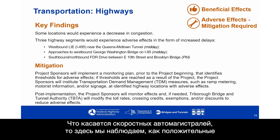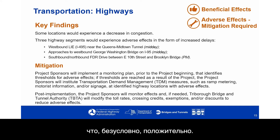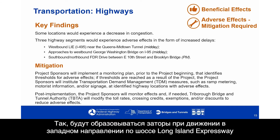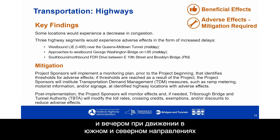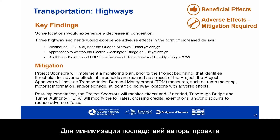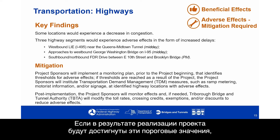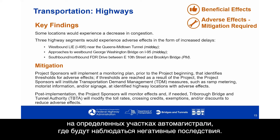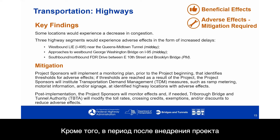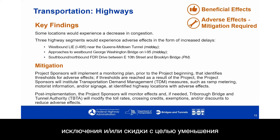With respect to highways, there are beneficial effects and some adverse effects in a few locations where mitigation is required. Three highway segments would experience adverse effects in the form of increased delays: the westbound Long Island Expressway near the Queens Midtown Tunnel at midday; approaches to the westbound George Washington Bridge on I-95 at midday; and the southbound and northbound FDR Drive between East 10th Street and Brooklyn Bridge in the evening. For mitigation, project sponsors will implement a monitoring plan with thresholds; if reached, they will institute transportation demand management measures such as ramp metering, motorist information, or signage. Post-implementation, TBTA may modify toll rates, crossing credits, exemptions, or discounts to reduce adverse effects.